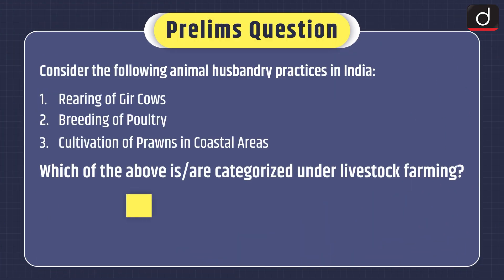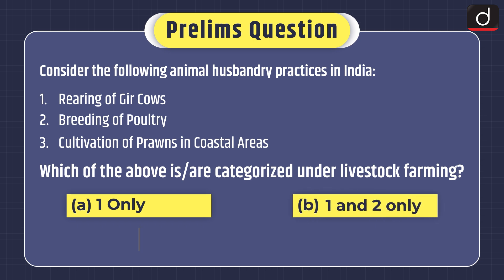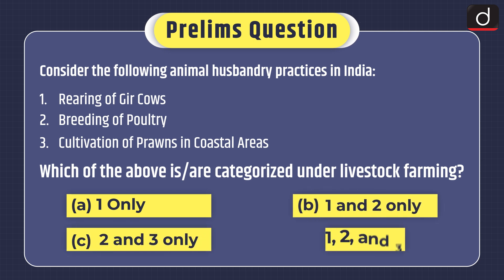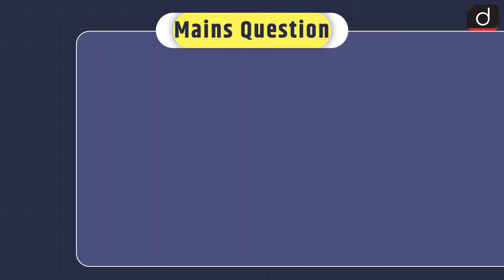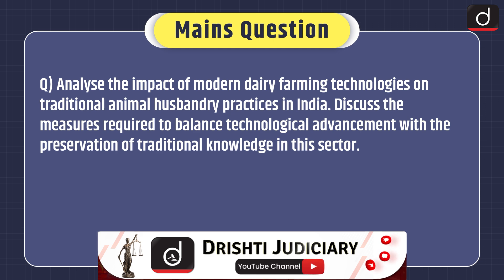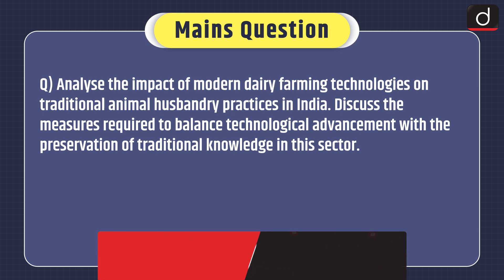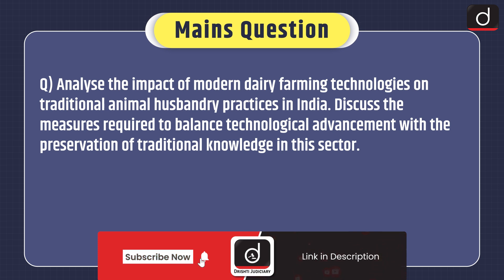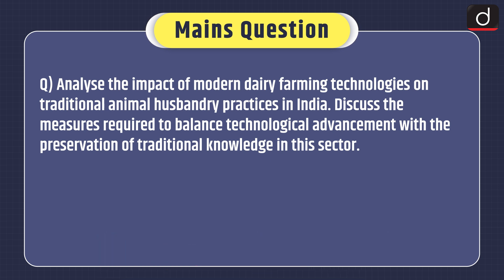For practice, consider this prelims-based question: Which of the following animal husbandry practices in India — 1. Rearing of dairy cows, 2. Breeding of poultry, 3. Cultivation of prawns in coastal areas — is or are categorized under livestock farming? Options: 1 only, 1 and 2 only, 2 and 3 only, or 1, 2 and 3. The mains question asks: Analyze the impact of modern dairy farming technologies on traditional animal husbandry practices in India, and discuss the measures required to balance technological advancement with the preservation of traditional knowledge in this sector. That's all for today — stay tuned for the next episode. Thanks for watching.